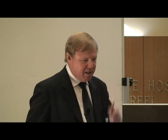I'm going to cover some of these in a bit more detail. Basically there's: localisation in the fruit, mode of entry — how it gets into the fruit, whether it can move around, sensitivity of timing with respect to berry development, grapevine development all the way through the season, intensity and duration of smoke, differential sensitivity between cultivars, and then possible mechanisms or strategies for prevention.